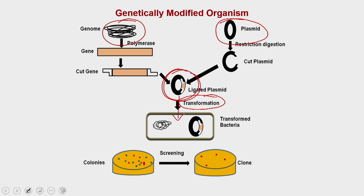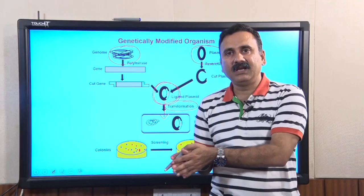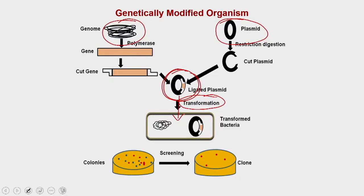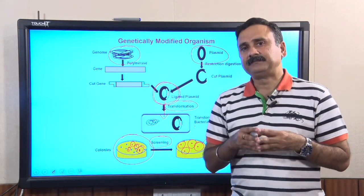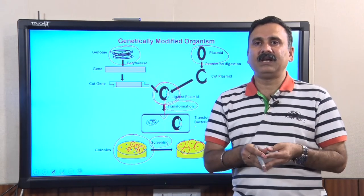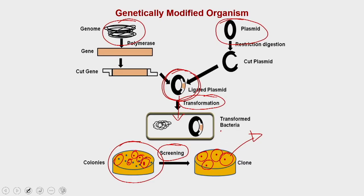Once you deliver the recombinant DNA into the cell, the next step is to select the cells which have received the DNA from those which have not. If you are taking colonies and have done the transfection, you have to do a screening to know which cells got your plasmid or recombinant DNA. You need exclusive criteria to distinguish these molecules from each other.